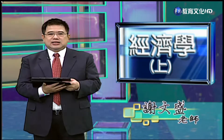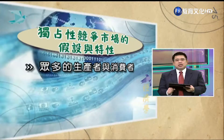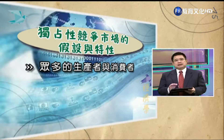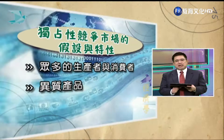我们来看一下独占性竞争市场的假设跟特性。分四大类市场时，着眼点大概有四个，第一个是市场里面的厂商数目。独占性竞争市场的第一个假设是有众多的生产者与消费者，这跟完全竞争市场是一样的。第二个假设是这些厂商生产的产品是不一样的，是差异化产品。